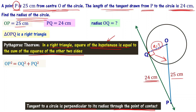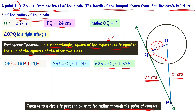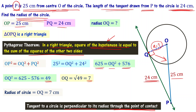Substituting OP equals 25 and PQ equals 24: 25 squared equals OQ squared plus 24 squared, which gives 625 equals OQ squared plus 576. Rearranging, OQ squared equals 625 minus 576, that is 49. OQ equals the square root of 49, which is 7. So OQ, the radius of the circle, equals 7 centimeters.